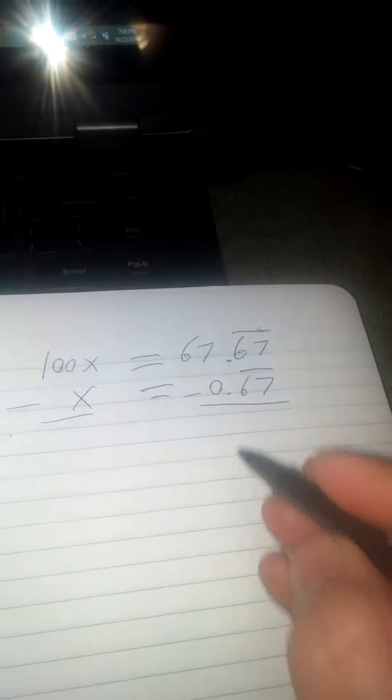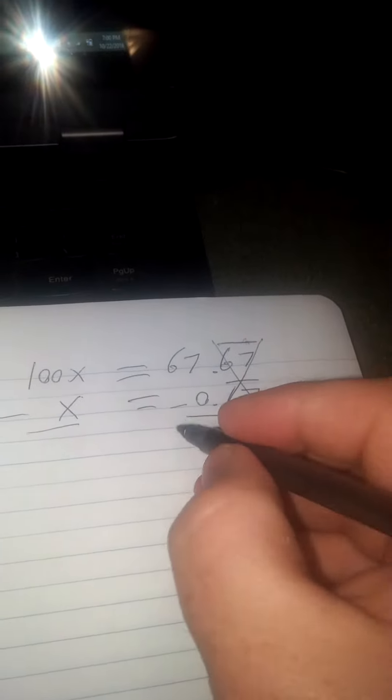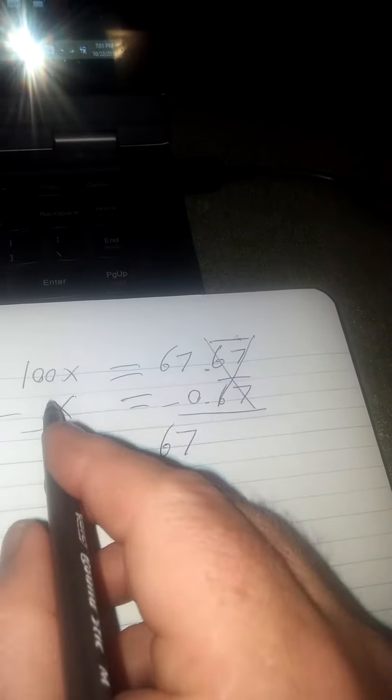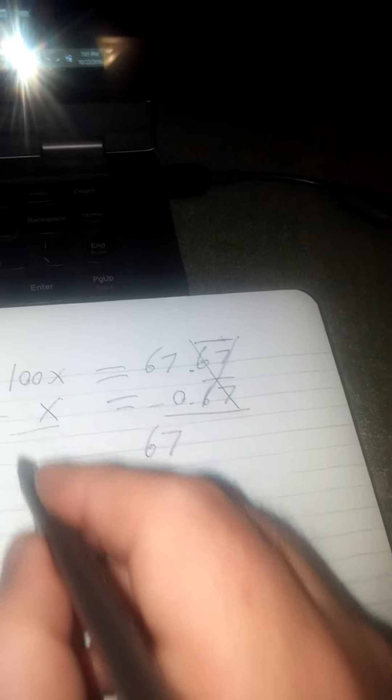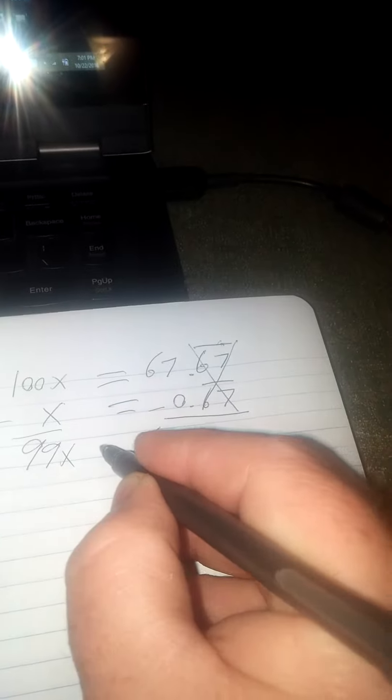Now that I subtract, this goes away. Now I'm just left with 67. And over here, if I take an x out of 100x's, I'm left with 99x's. So 99x equals 67.